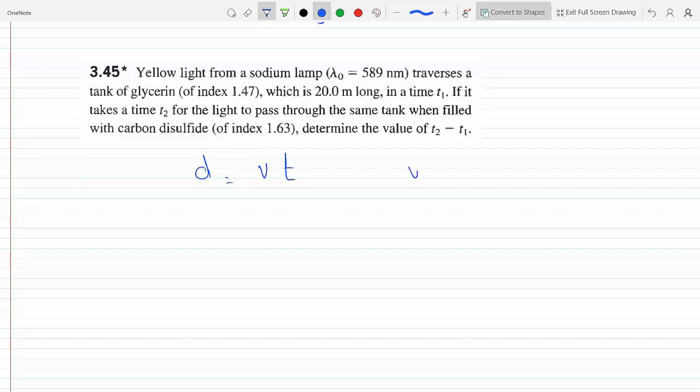The velocity is C over n because the light changes its speed when it goes to some index of refraction whose value is different than vacuum, which is 1. So that means t has to equal...